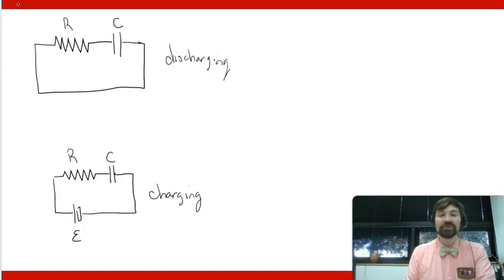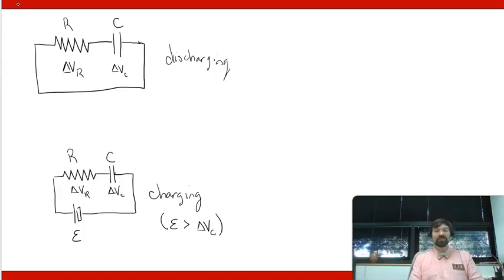But in terms of voltages you have maybe delta V_R and delta V_C. And down here delta V_C and delta V_R. It's charging assuming of course that epsilon is greater than delta V_C. If delta V_C is greater than epsilon then actually it's going to be discharging through the battery as well as the resistor. And essentially you would then need to know what the difference between these two is to figure out the relevant parameters.